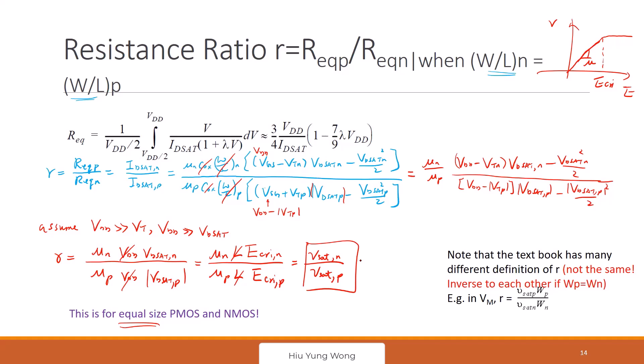But this one can have some confusion. The textbook also has another definition. Remember the R that you use to calculate the VM, which is saturation velocity of P times WP divided by saturation velocity of N times WN. They are different, but we won't get confused. I will be very clear in the exam. But now the point is we now know the ratio between the PMOS and NMOS resistance is equal to R. Maybe I should write it better, not like a gamma. This is something we're going to use later.